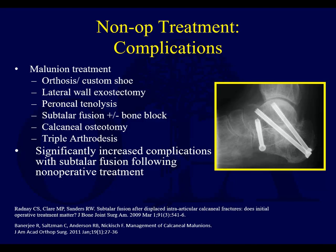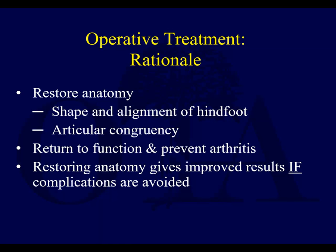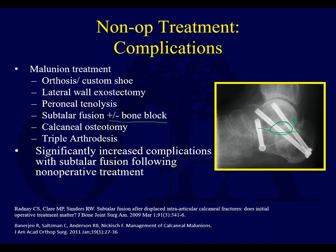For malunions, you can try custom shoes, a lateral wall exostectomy, peroneal tenolysis, or subtalar fusion. If you have substantial loss of height, you may need to add a bone block fusion — meaning you distract and place a bone block to increase height before doing your fusion. This type of procedure will have more complications because the anatomy is so disrupted when the fracture has been allowed to heal non-operatively. In the final set of slides, we'll get into operative management, surgical approaches, and then wrap up this lecture on calcaneal fractures.